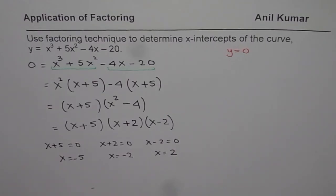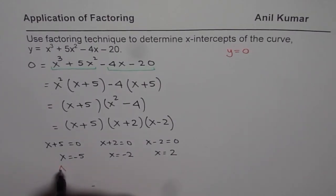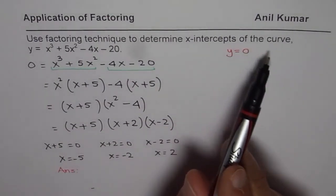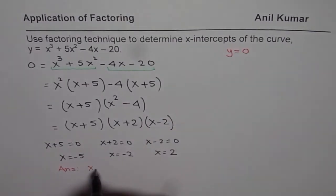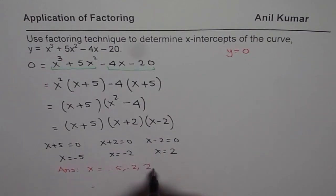That is how you could find x-intercepts by factoring. So, we can write down our answer that the x-intercepts of the curve will be at x = -5, -2, and 2.